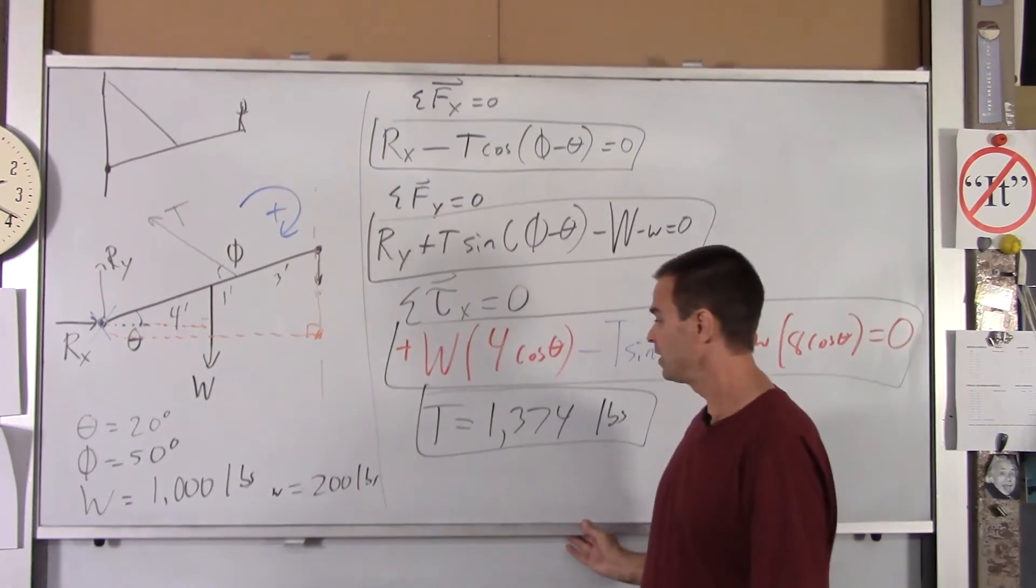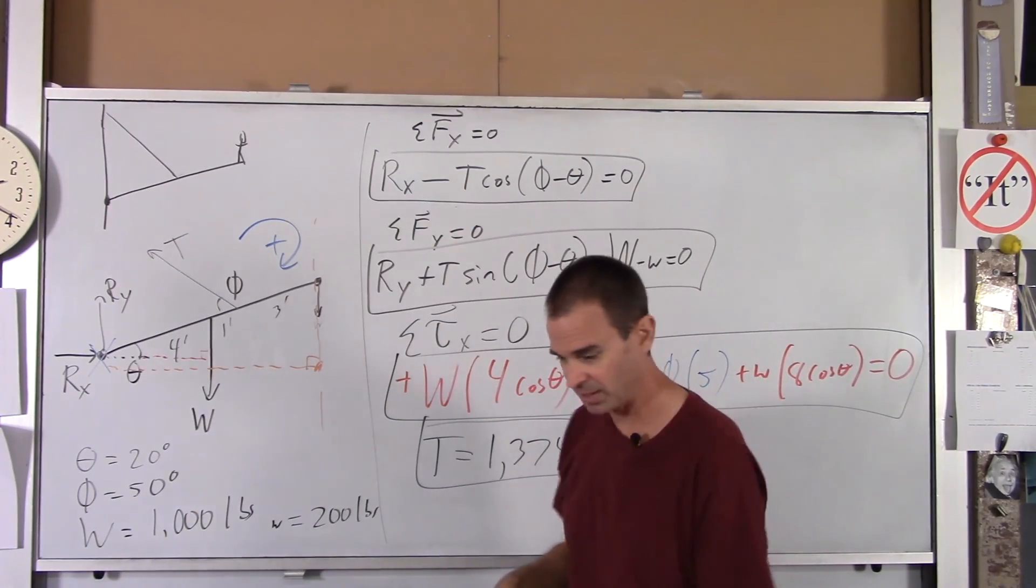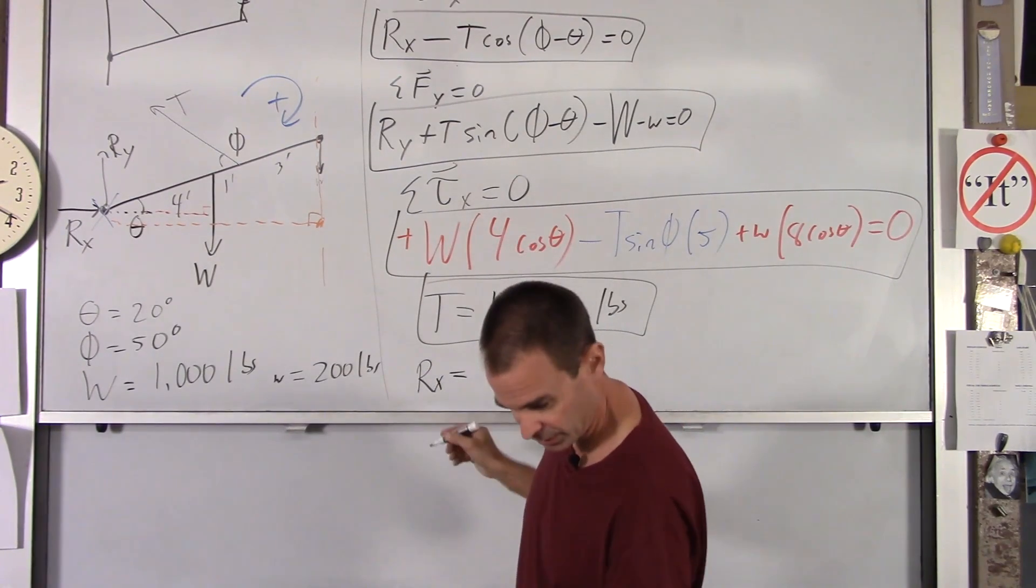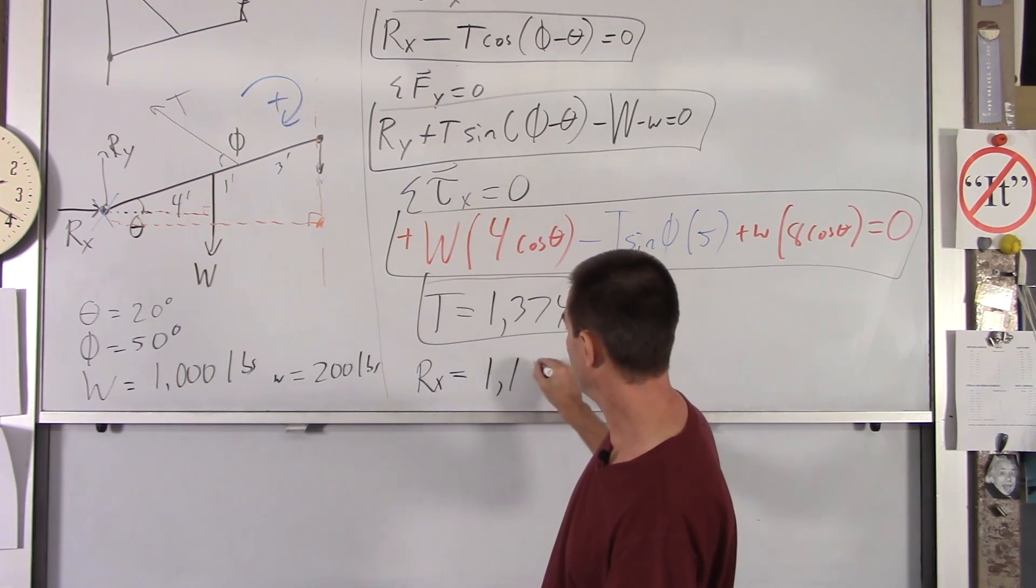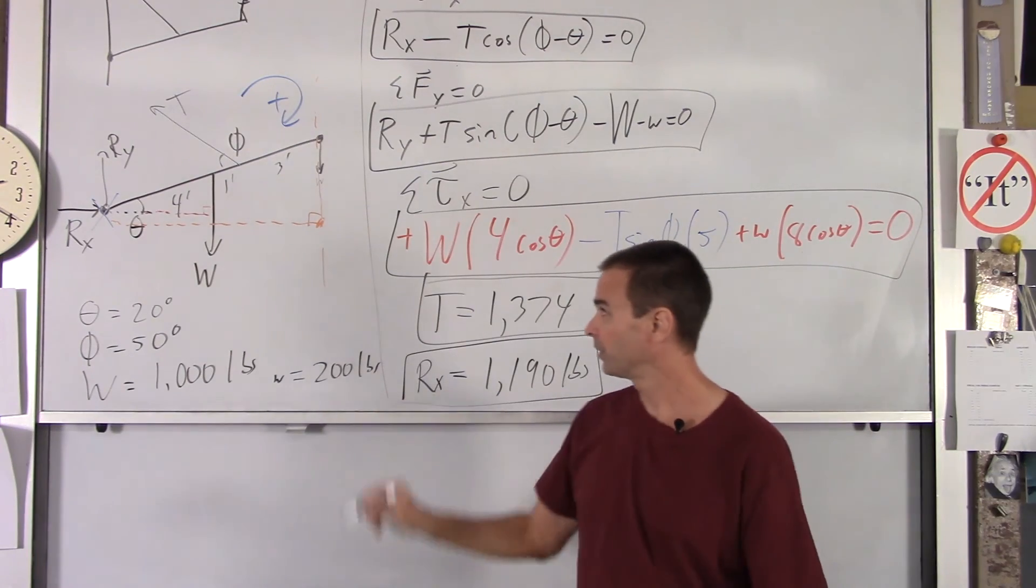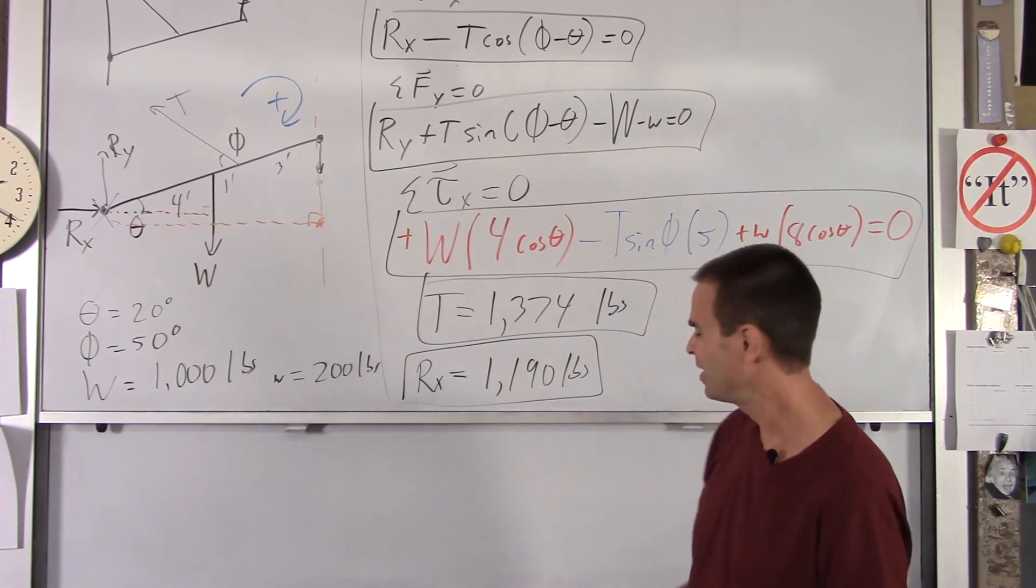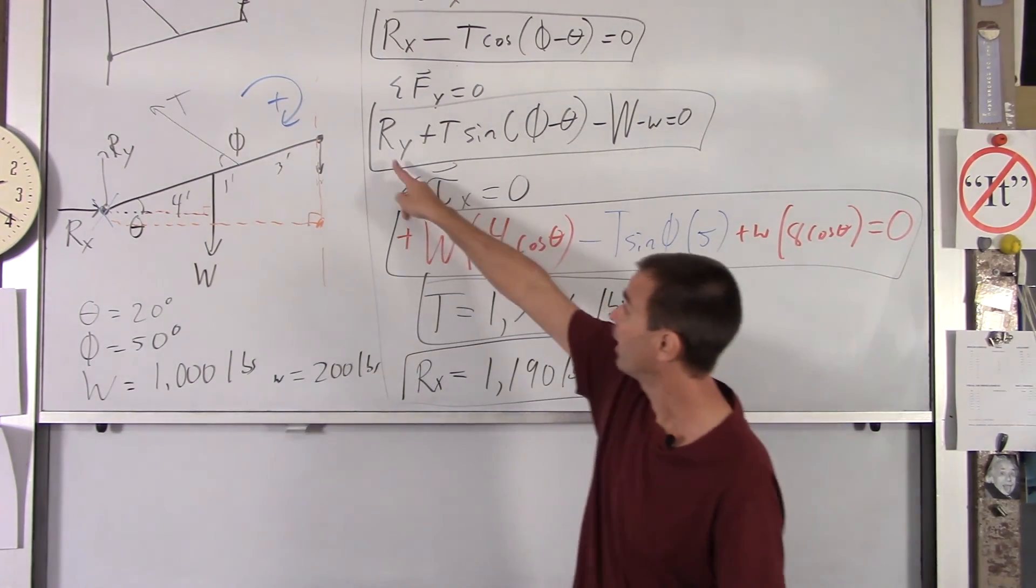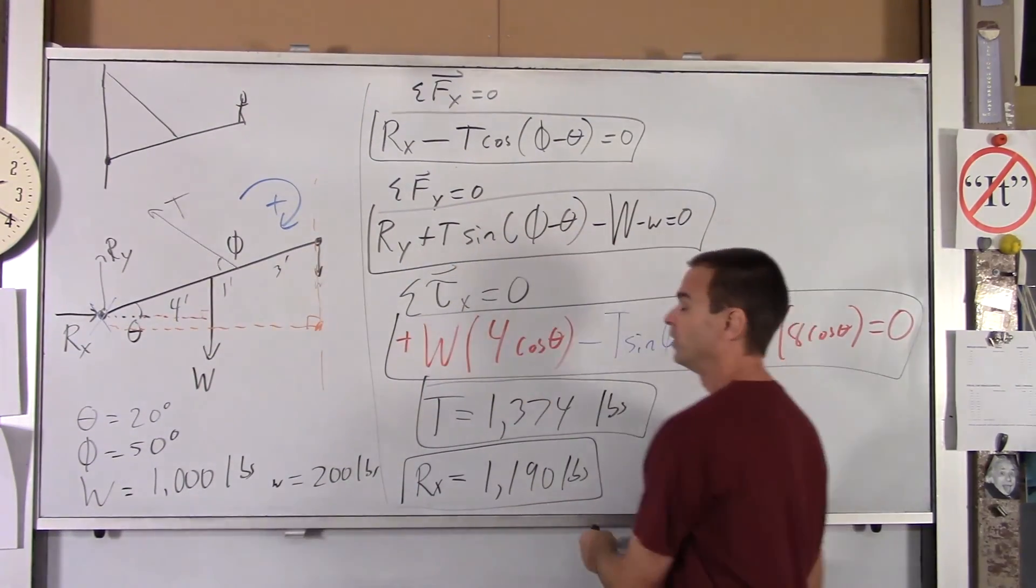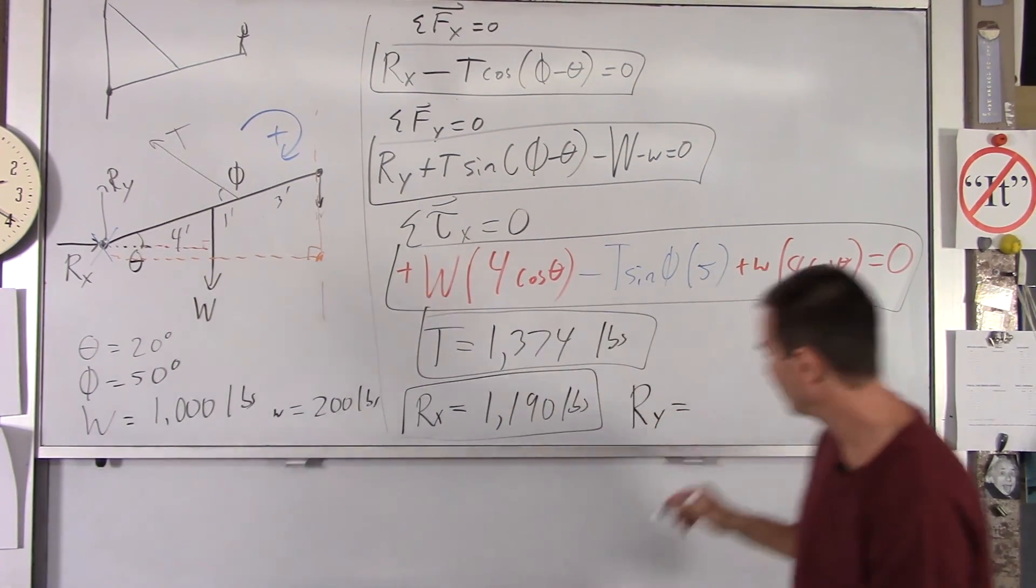Now, once you've got this, you can go back and plug that tension into here to get RX. So when I did that, I got RX was 1190 pounds, which is pretty hefty. So you better make sure that your castle wall is sturdy and that the support attaching the bridge to the castle walls is fairly sturdy. And then also, similarly, you can find Ry right here. You can find Ry here because now we have tension and we know these. And if you do that, I got Ry to be 513 pounds.